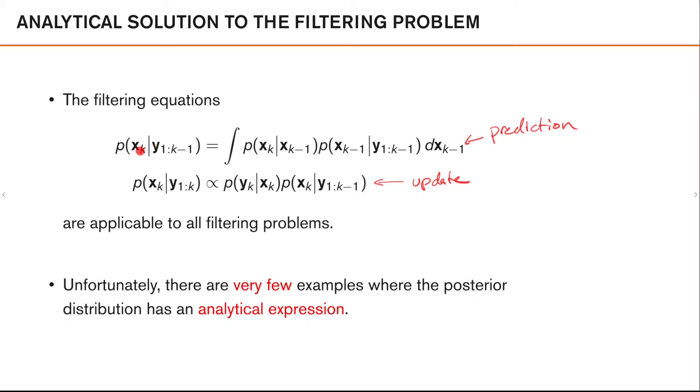where we in the prediction step calculated the predicted distribution, that is the distribution of x_k given measurements up to time k-1, which is the predicted density that we calculated in the previous step.